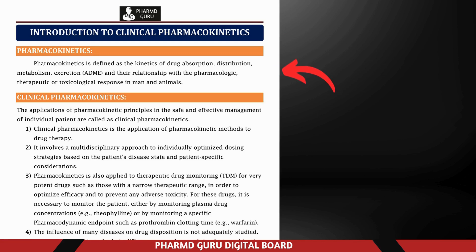Let's see the definitions. Pharmacokinetics is defined as the kinetics of drug absorption, distribution, metabolism, and excretion — ADME. Pharmacokinetic studies examine what happens to a drug in the body after it is taken, focusing on four key processes: absorption (how the drug enters the bloodstream), distribution (how it spreads through the body), metabolism (how it is broken down, often in the liver), and excretion (how it is eliminated from the body). These processes are collectively known as ADME.